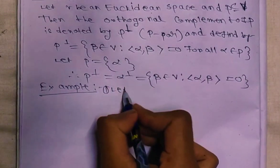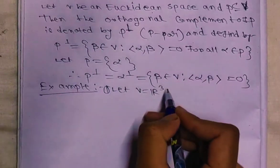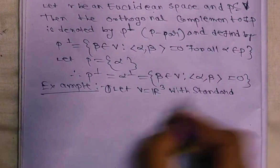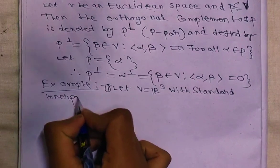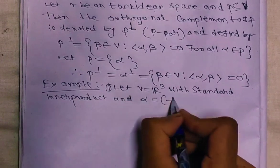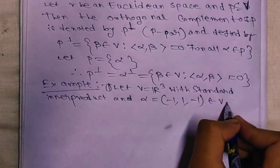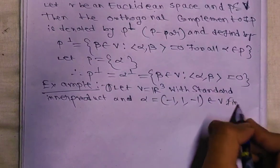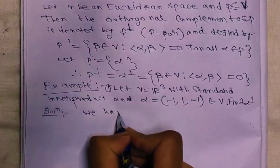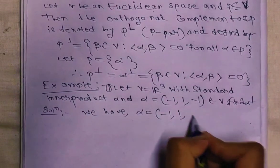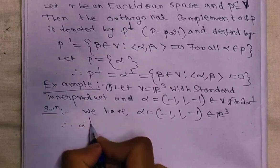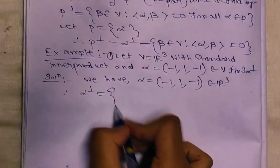First example: let V equal R³ with the standard inner product, and let alpha equal (-1, 1, -1) belonging to V. Find alpha⊥. Solution: we have alpha equals (-1, 1, -1) belonging to R³.